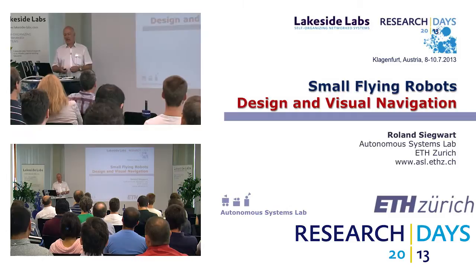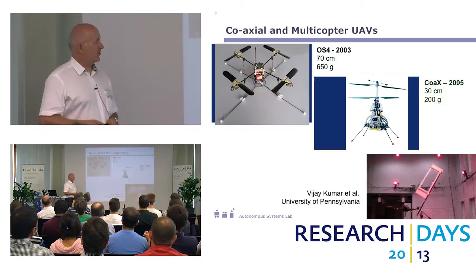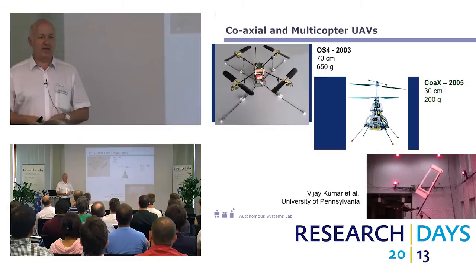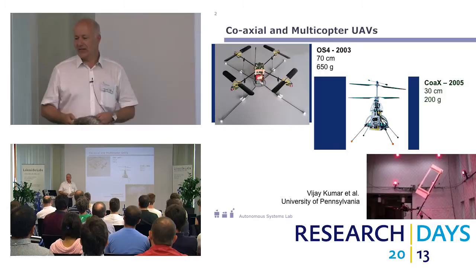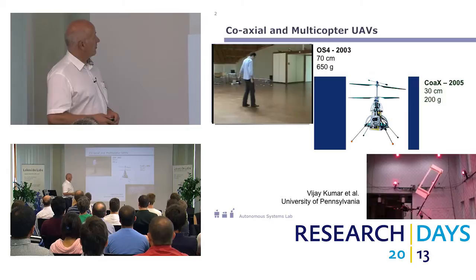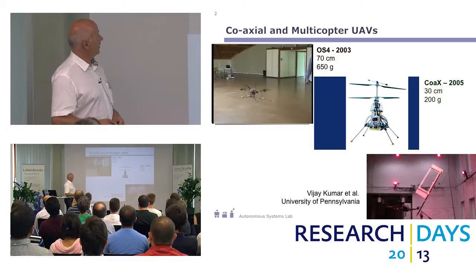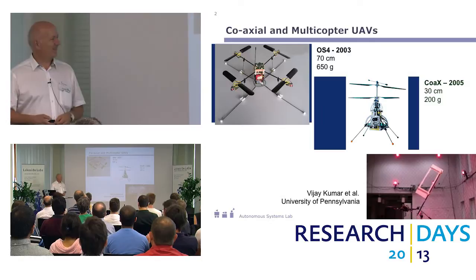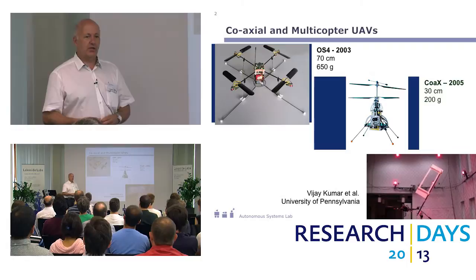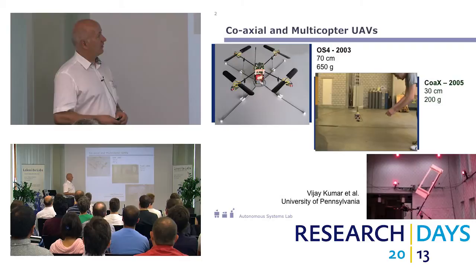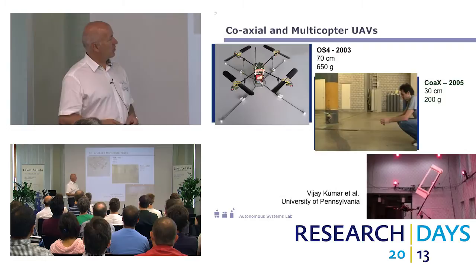We started with flying actually quite a while ago, about 2002, because we realized that with small wheeled robots we are limited in difficult situations where we cannot go over obstacles. The first flying robot we had was this quadrotor, which probably was the first one which was even able to avoid collision. The coaxial work came a little bit later.